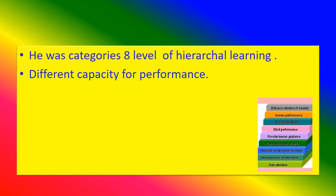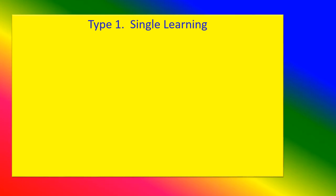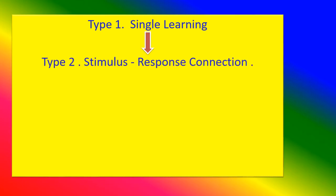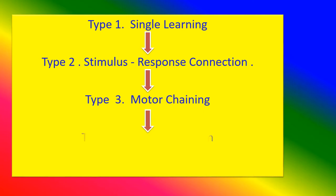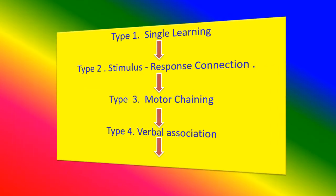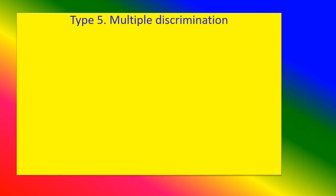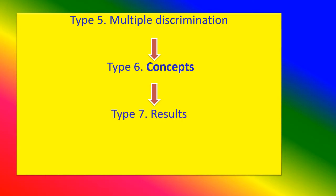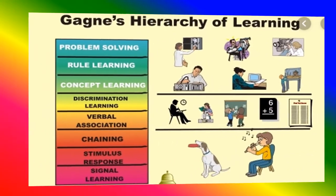Gagné categorized 8 levels of hierarchical learning as different capacities for performance: Type 1 Signal Learning, Type 2 Stimulus-Response Connection, Type 3 Motor Training (Chaining), Type 4 Verbal Association, Type 5 Multiple Discrimination, Type 6 Concepts, Type 7 Rules, and Type 8 Problem Solving.